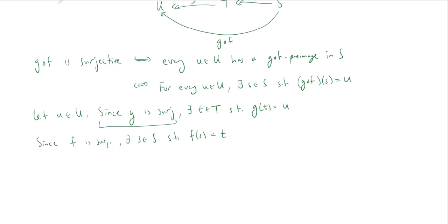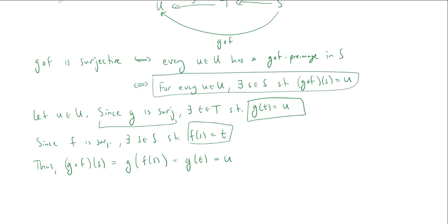But now I can compose these. Thus, if I apply g composed f to this little s, this is the same thing as g of f of s. And f of s is equal to t. So this is equal to g of t. And g of t is equal to u. Therefore, g composed f of s is equal to u. And that is precisely what we said we needed to show.